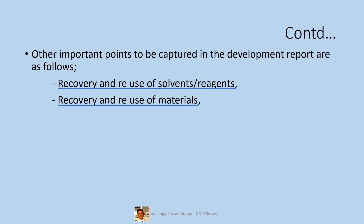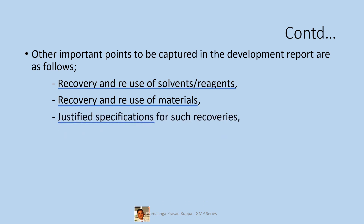Recovery of materials includes recovery of intermediates or APIs from the mother liquor or from filters — detailed information should be captured. Such recoveries are called second crop. The second crop recovery should be part of the report for economical viability of the process. Specifications for recovered solvents or materials need not be the same as the original specifications — suitable, justifiable specifications should be assigned. For example, for a recovered solvent, it may be adequate to check purity by GC and water content, provided the solvent is reused in the same step. Similarly, second crop materials may be checked for impurities.